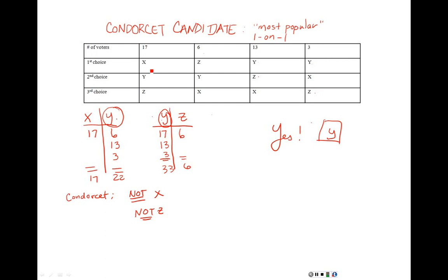Plurality is a great system because it's easy — count the first-place votes, whoever has the most wins. But we end up with unfair situations where the more popular candidate didn't get all the first-place votes. For example, Ralph Nader split the vote in a real election, allowing someone else to get the most first-place votes even though that wasn't the preferred candidate in one-on-one matchups. This idea of a Condorcet candidate as a fair winner is a key issue in voting theory.